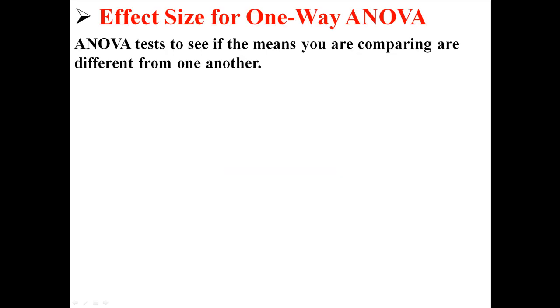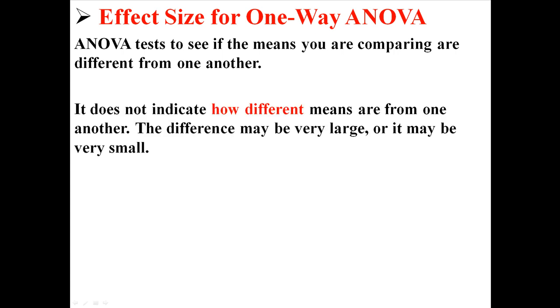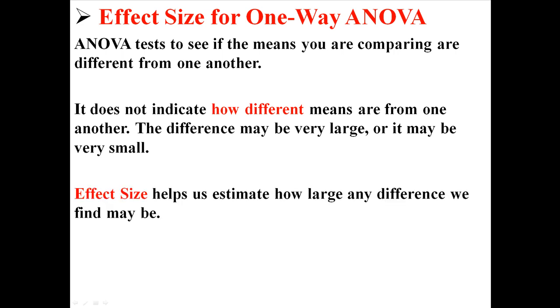Remember that an ANOVA tests to see if the means you are comparing are different from one another. It does not indicate how different these means are from one another. The difference may be very large, or it may be very small. You don't know how big it is, you just know that there is a difference. So we use effect size to estimate how large, or basically what is the size of any difference that we find.